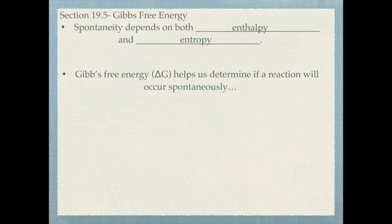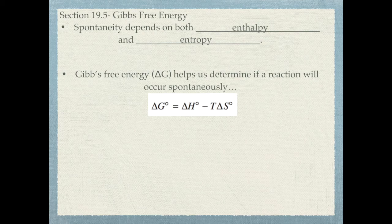The Gibbs free energy simply lets us know if a reaction is going to be spontaneous. The formula is: the standard free energy change equals the standard enthalpy change minus the temperature times the standard entropy change. Those degree symbols represent standard conditions.